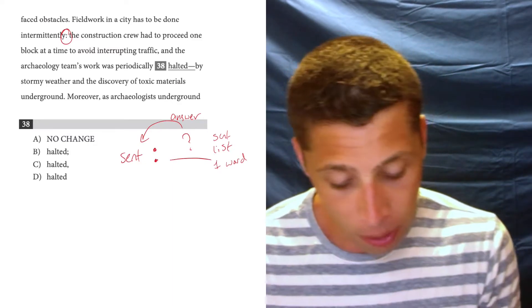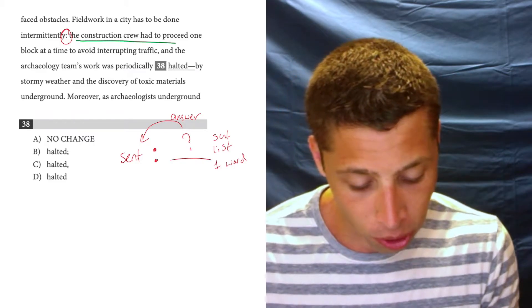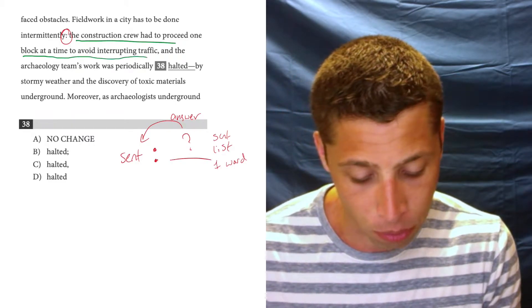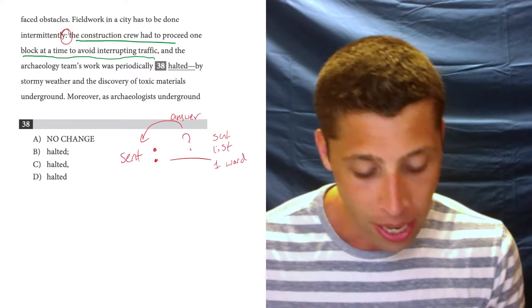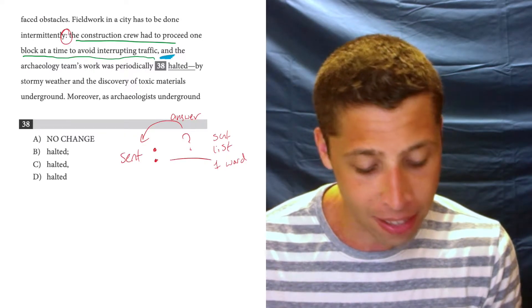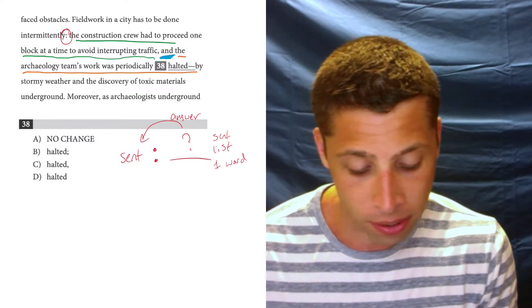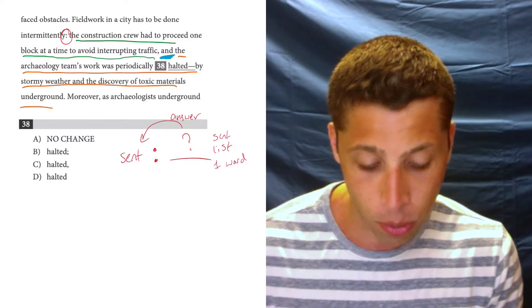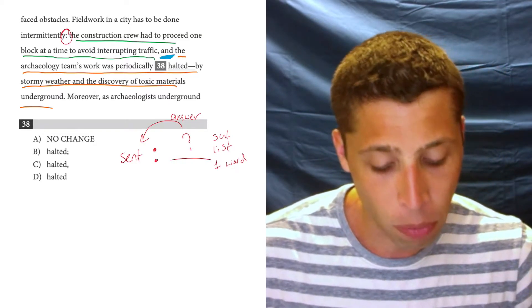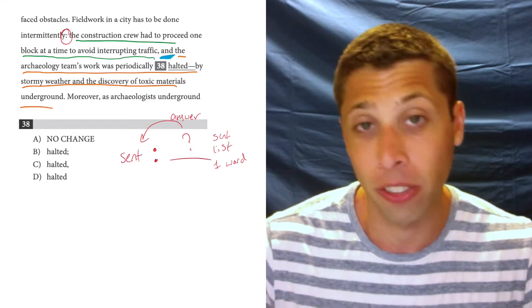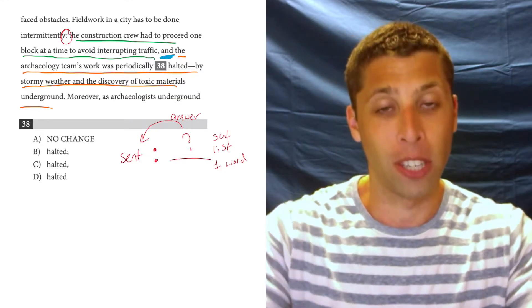It's actually two sentences because we have this part here. The construction crew had to proceed one block at a time to avoid interrupting traffic. That's a sentence. We could have ended that with a period. And then that conjunction and is going to help me out a lot by attaching a new sentence to this other one as well. The archaeology team's work was periodically halted by stormy weather and the discovery of toxic materials underground. There you go. Second sentence.